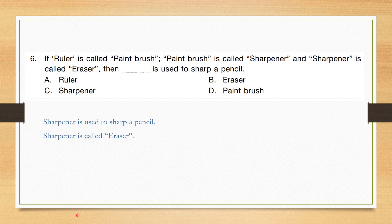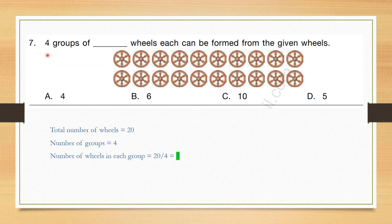Question number 6: If ruler is called paintbrush, paintbrush is called sharpener, and sharpener is called eraser — then what is used to sharpen the pencil? We know a sharpener is used to sharpen the pencil, but sharpener is called eraser. So the correct answer is eraser, option B.